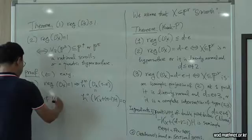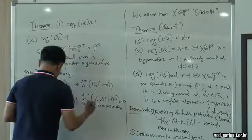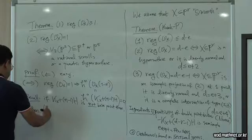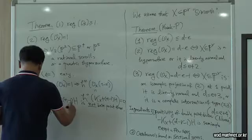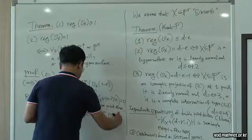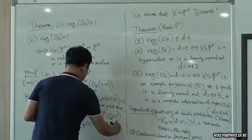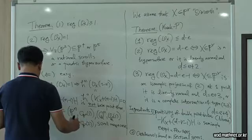Recall the classical theorem: if this divisor K_X + (N−1)H is not base point free, then there is a classification — the polarized pair is isomorphic to (P^N, O(1)), or a hyperquadric, or (P^2, O(2)), or a scroll over a curve.